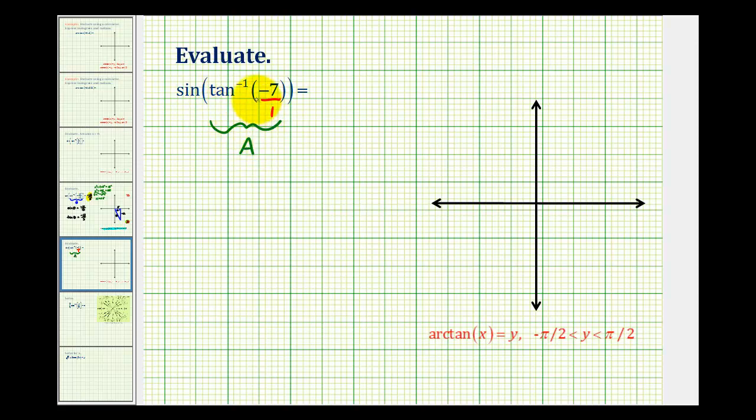Another way to express this would be to say that the tangent of angle A must equal negative seven over one. So what we can do is model this angle with a reference triangle, and then once we have the reference triangle, we can determine the sine of angle A, which would be what this expression would be equal to.